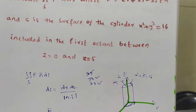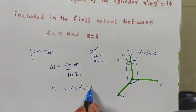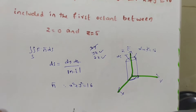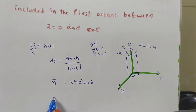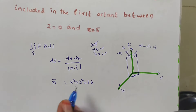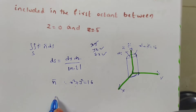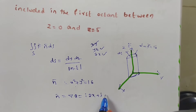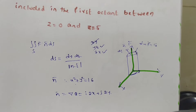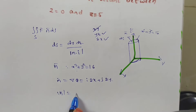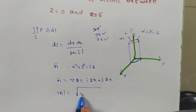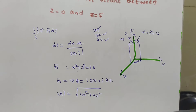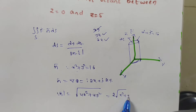n̄ is the normal to the surface x² + y² = 16. We find it as the gradient: n̄ = ∇φ = 2xi + 2yj. Then |n̄| = √(4x² + 4y²) = 2√(x² + y²). Since x² + y² = 16, we get |n̄| = 2√16 = 8.